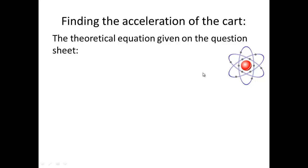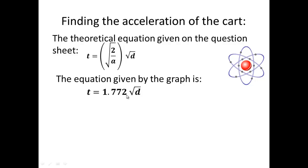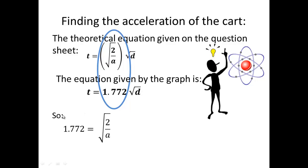Now let's find the acceleration of the cart. The theoretical equation is t = √(2/a) × √d. The equation we've just figured out from our graph is t = 1.772 × √d. Our time and square root of distance are the same, so that means whatever's in that bracket is equal to 1.772. So 1.772 = √(2/a). We square both sides, then swap the a and 1.772² so it becomes 2 / 1.772² = a. We type that into our calculator and get 0.637 meters per second per second.